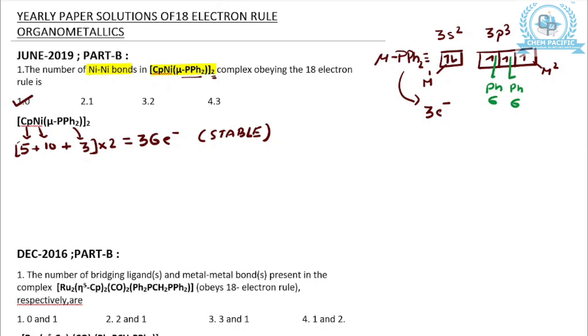Now let us study the structure in detail as well. It is a rocker structure. These are the two nickel centers.